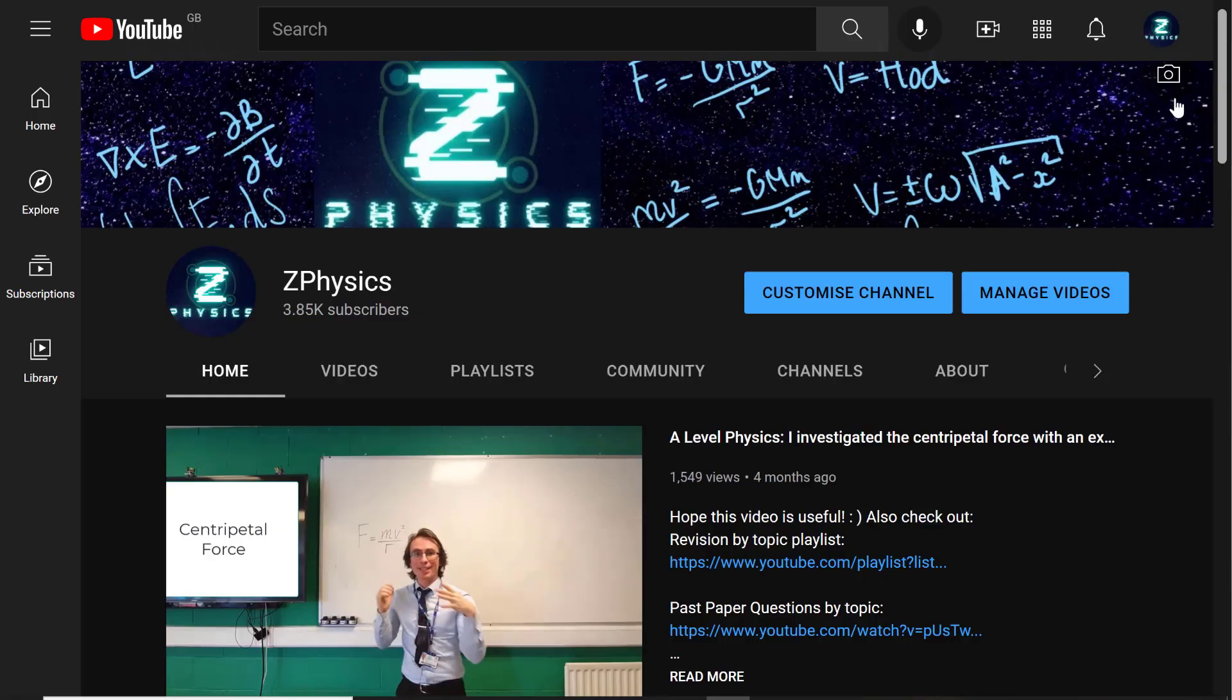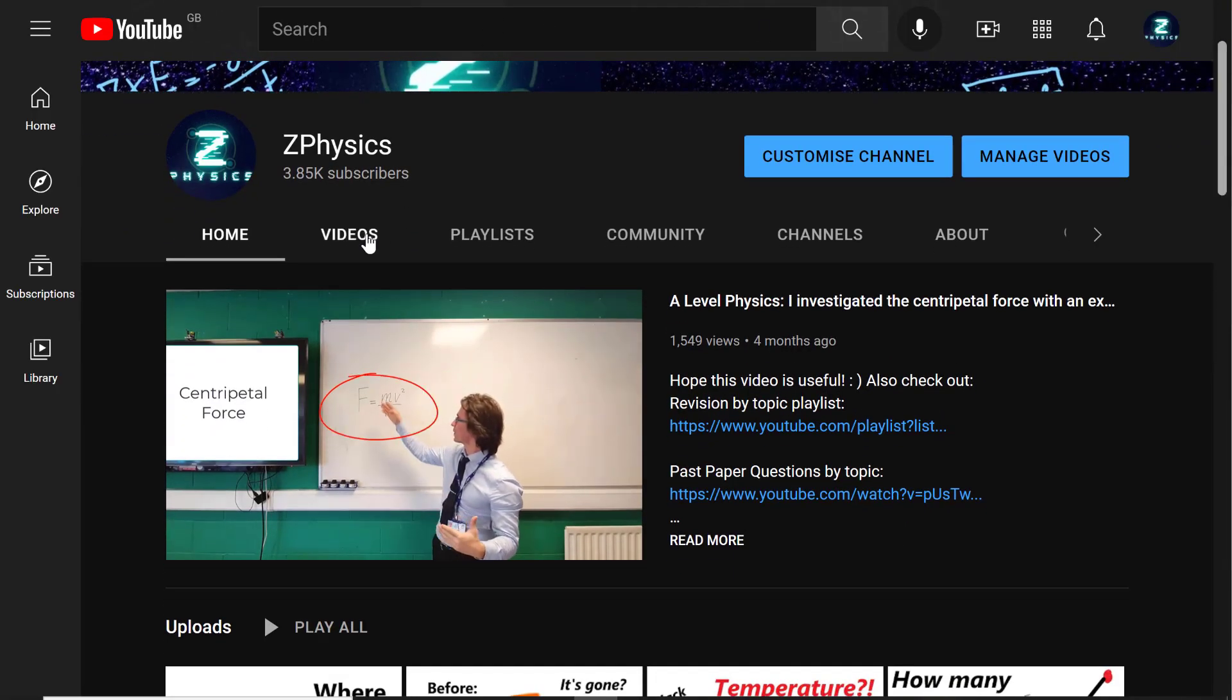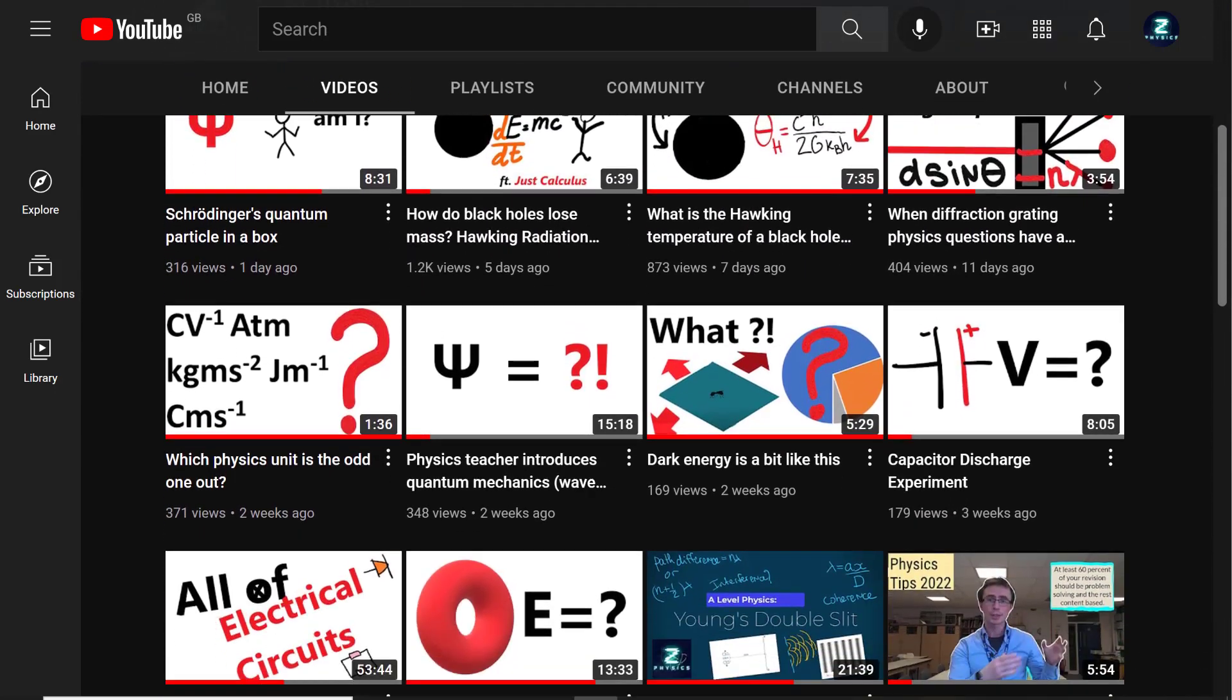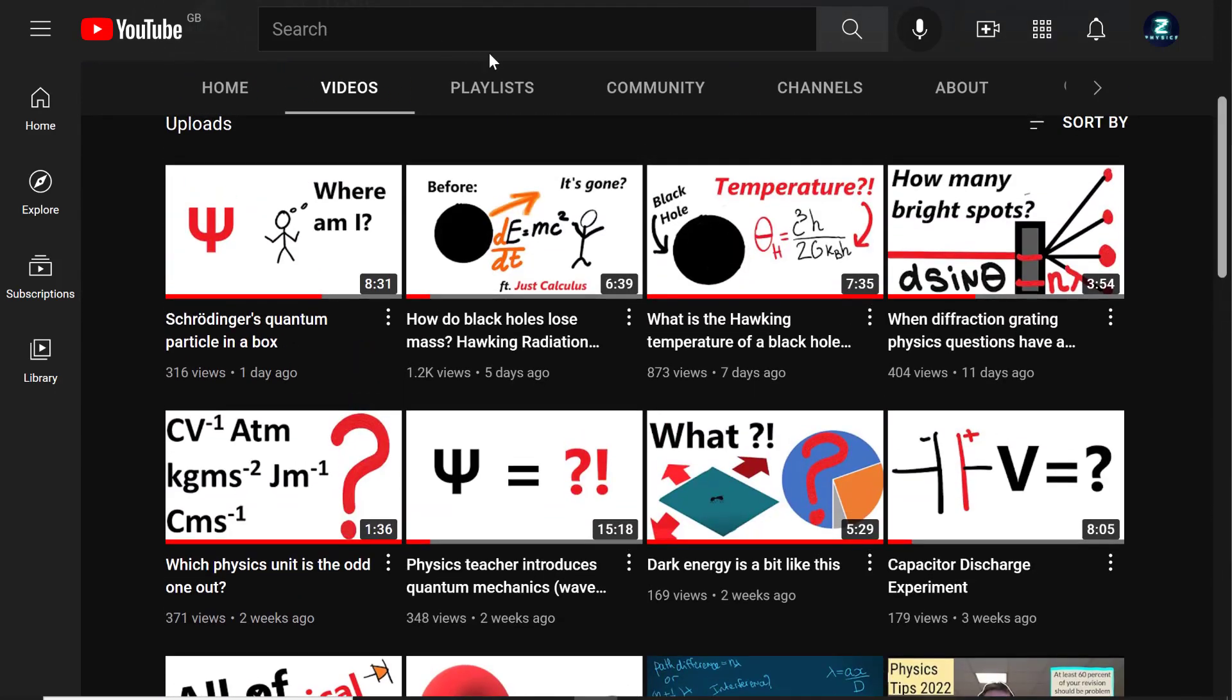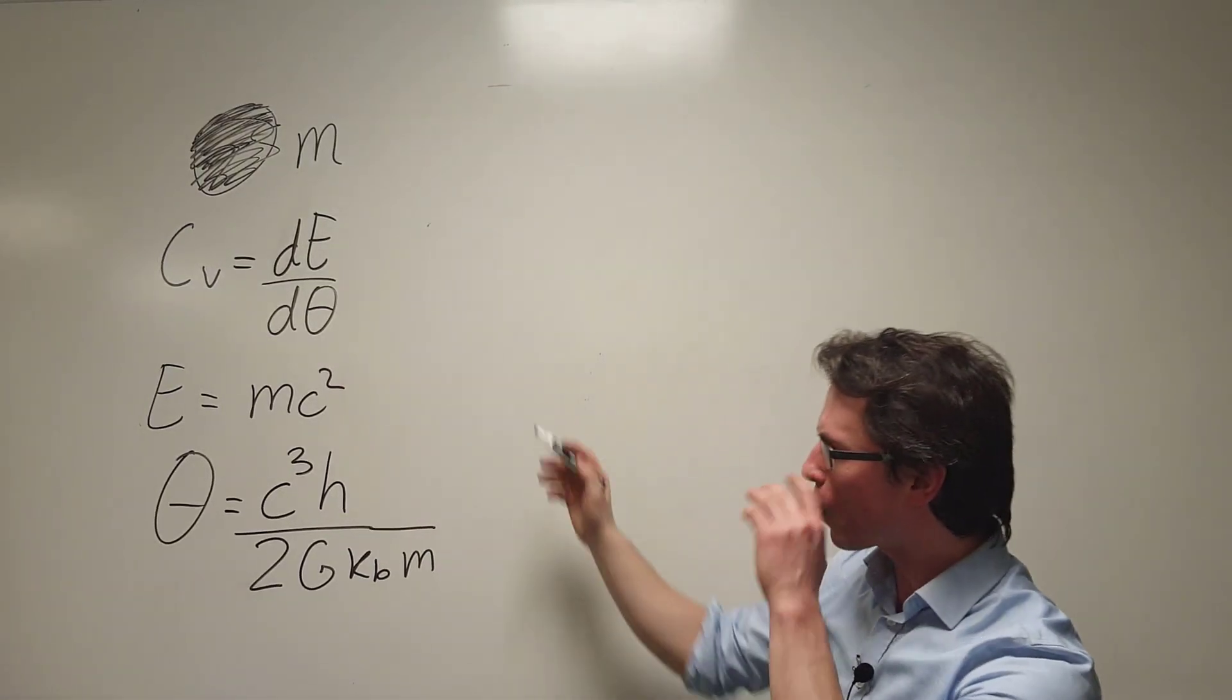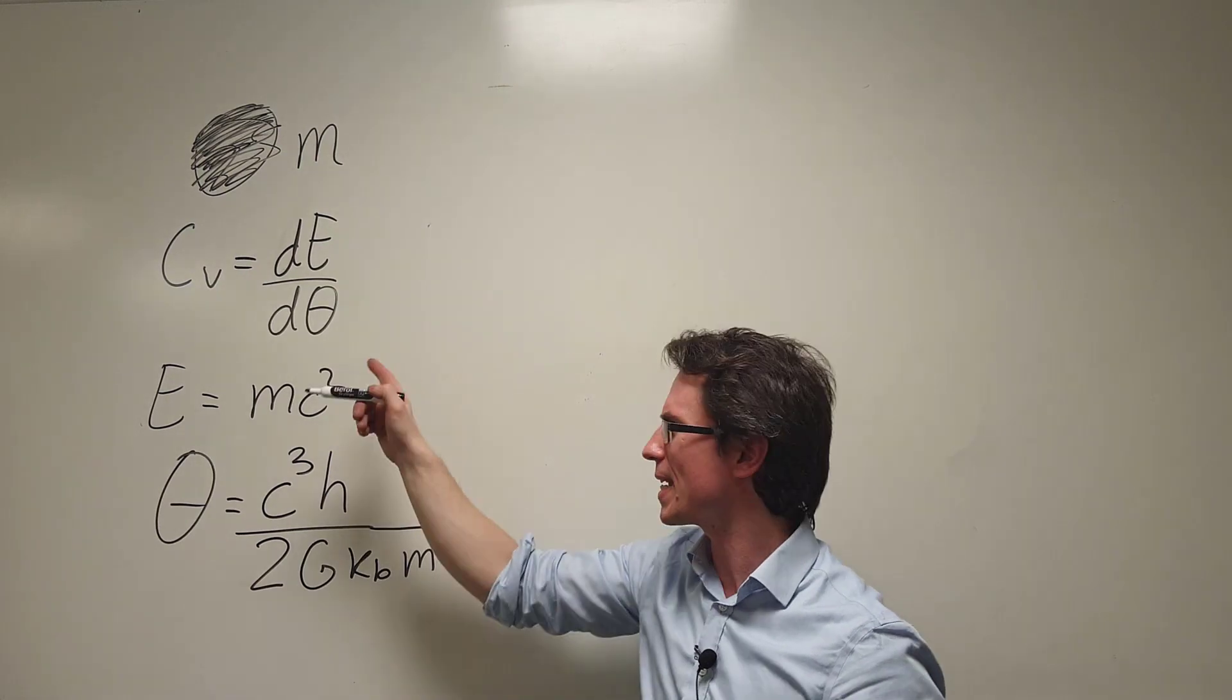If you're wondering where those equations come from, have a browse from my channel. You're going to see lots of derivations from the previous parts of this problem. Okay well first off we can see that the heat capacity is equal to dE by d theta. So let's investigate both dE and d theta.